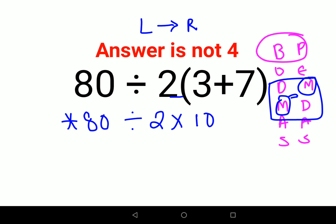So basically first we will do 80 divided by 2, that gets you 40, and then you multiply that answer with 10. So answer comes out to be 400.